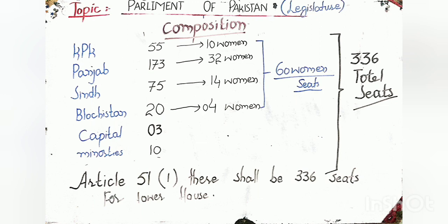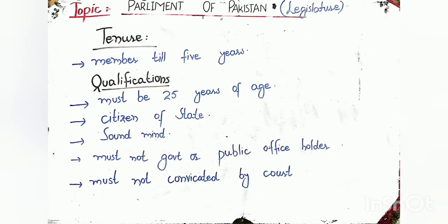Now let's move towards the composition of the National Assembly, which is the lower house. The Federation includes Islamabad (Centre) and 4 provinces. Khyber Pakhtunkhwa has 55 seats in the National Assembly, of which 10 are for women. Punjab has 173 seats, with 32 reserved for women. Sindh has 75 seats with 14 for women. Balochistan has 20 seats with 4 for women. The Capital has 3 seats and minorities have 10 seats. This gives us 60 seats reserved for women. Article 51 of the Constitution of Pakistan states that there are 336 total seats in the National Assembly.